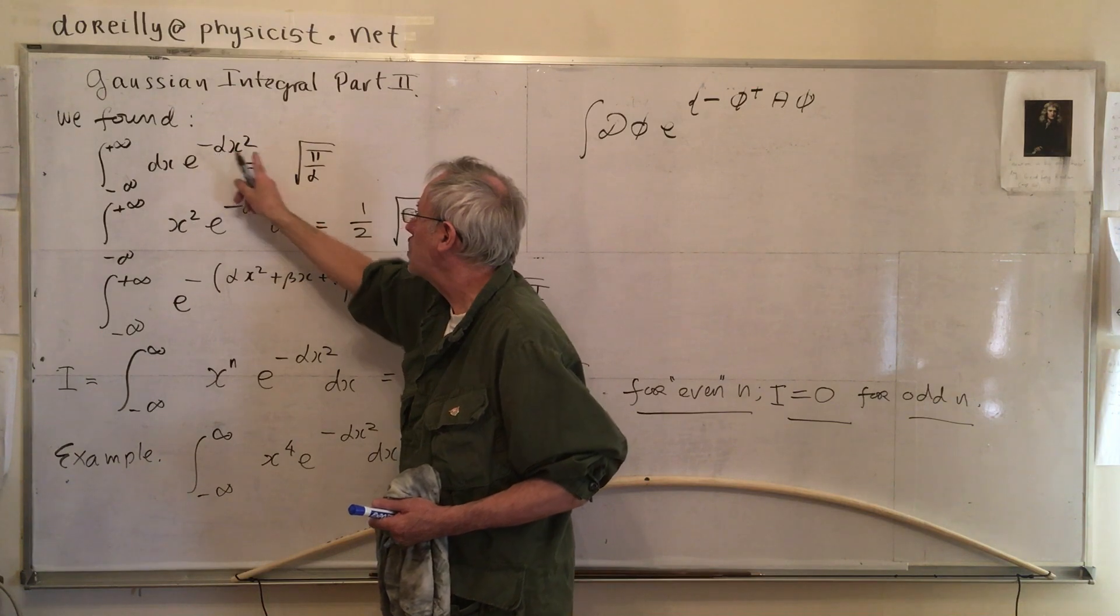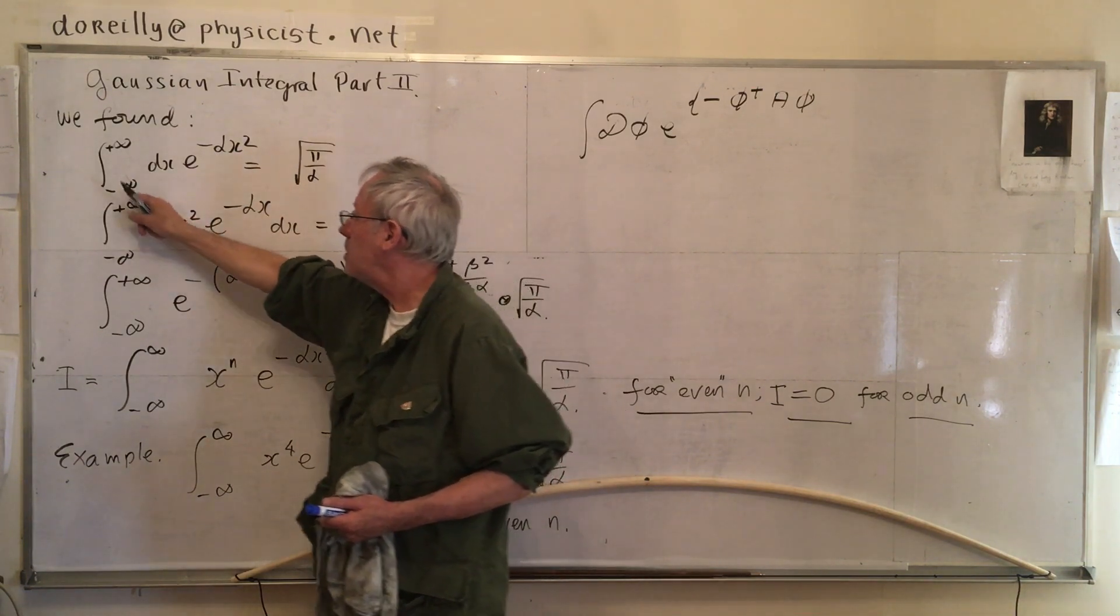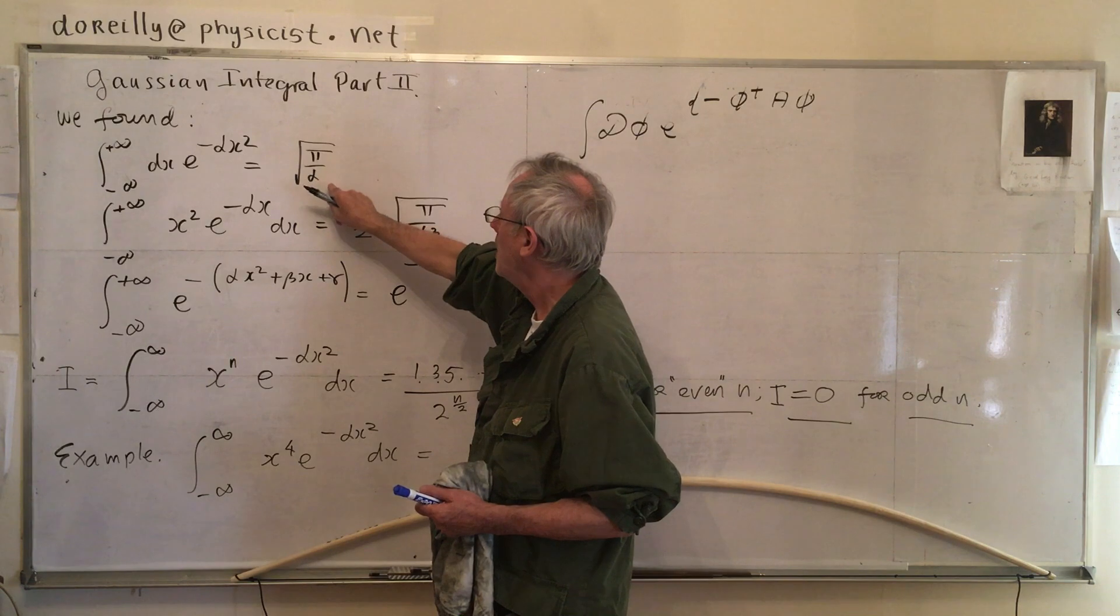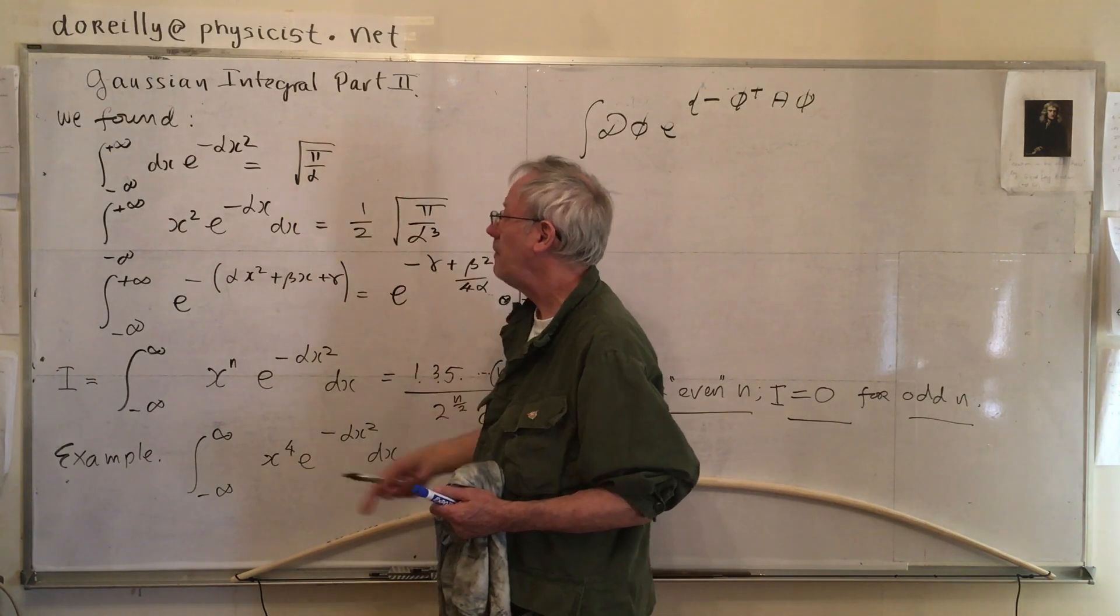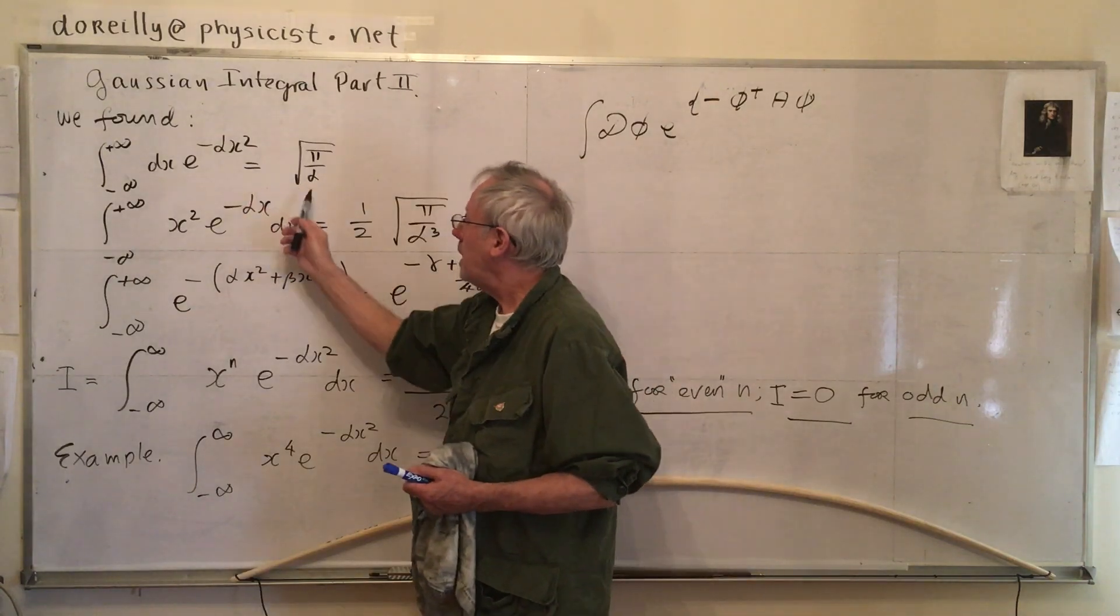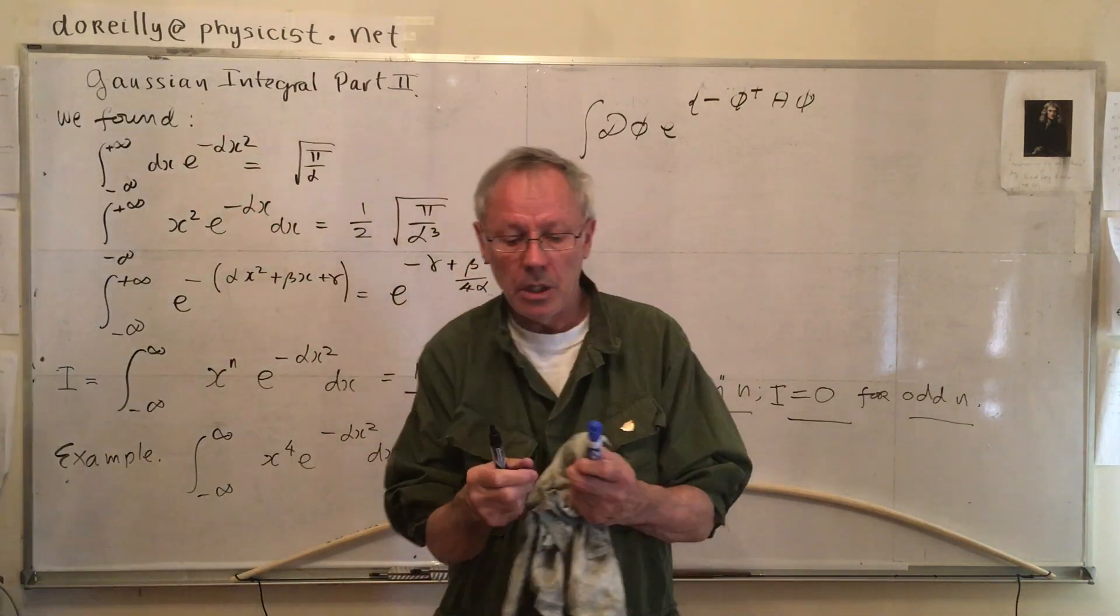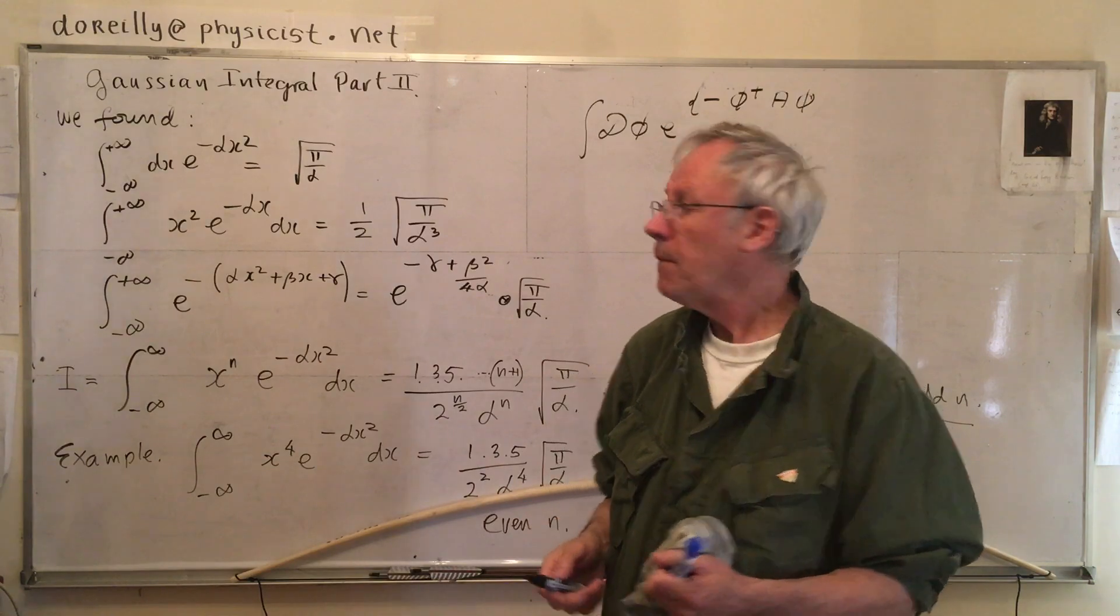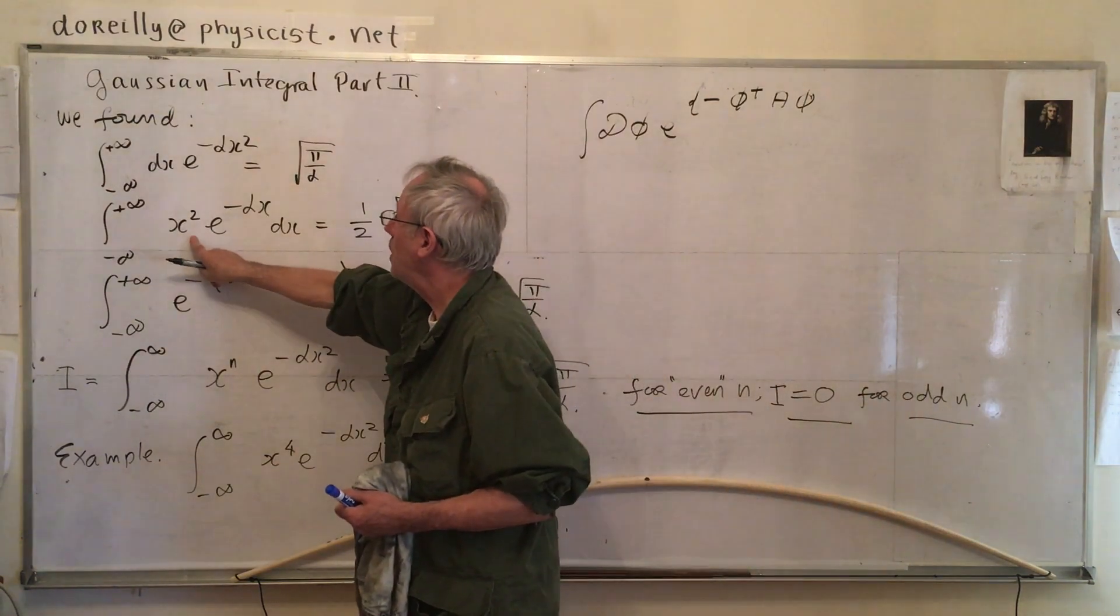e to the minus alpha x squared, integrated from minus infinity to plus infinity over dx, is root pi over alpha, for alpha being some constant. You can take derivatives, differentiation under the integral sign, like I did before, to get other results, such as this one here.